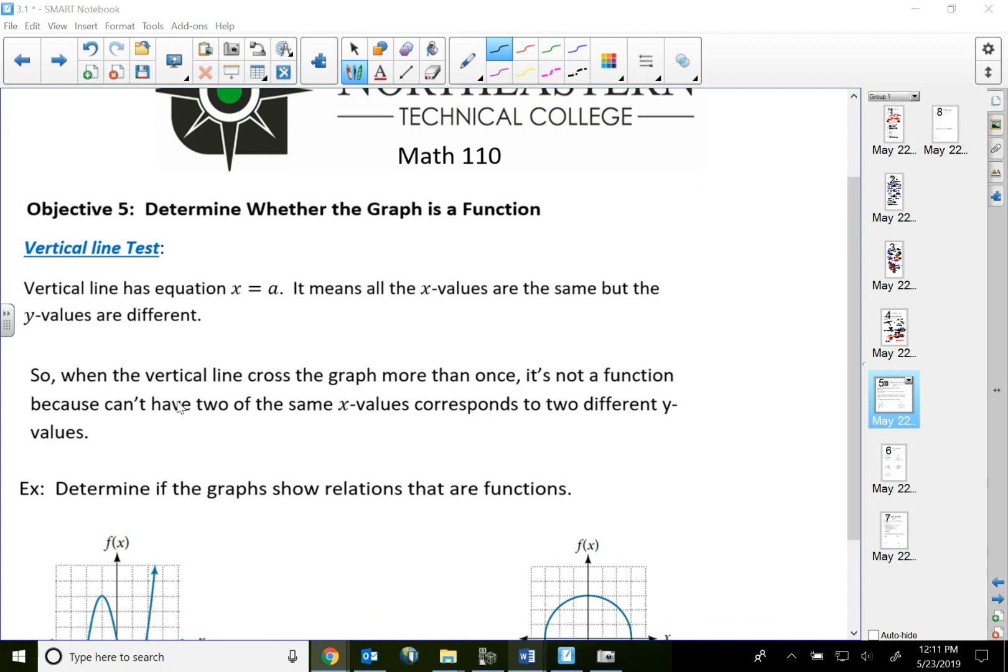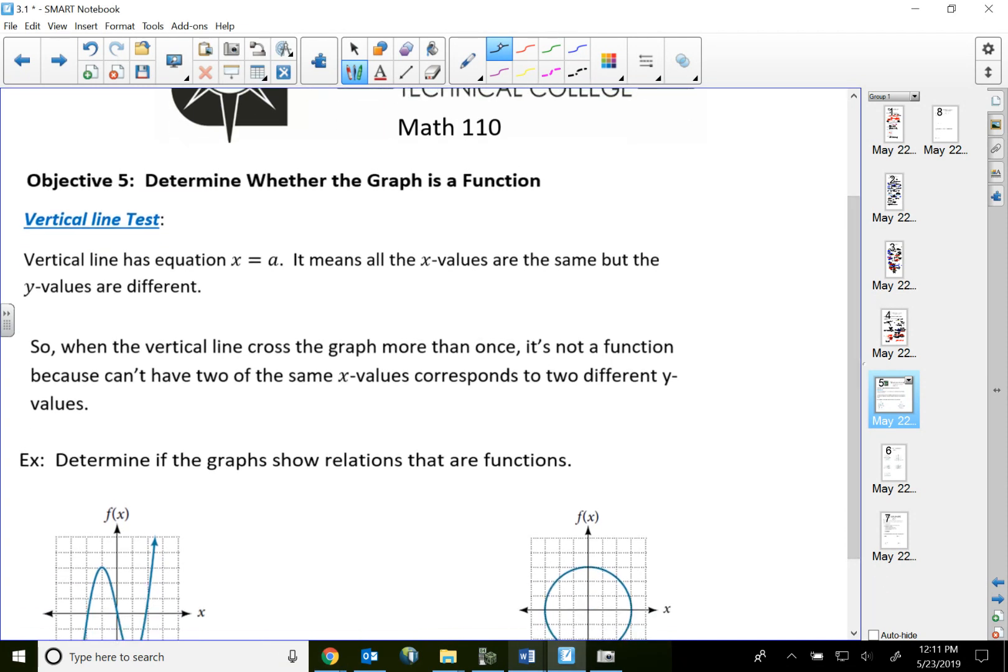So the way we're going to do this is by something called the vertical line test. I need you to think back on the characteristic of a vertical line. A vertical line has an equation that says x equal to a number. It simply means that all the x values are the same on that vertical line, but the y values are different.